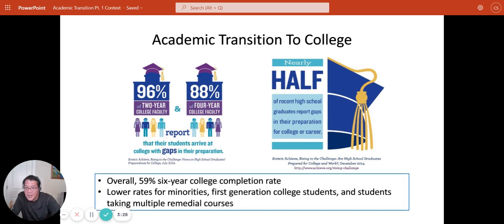And if you look at minorities, first-generation college students and students who are taking multiple remedial courses, that rate is actually much lower. The overall completion rate for college is 59 percent after six years.